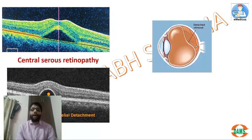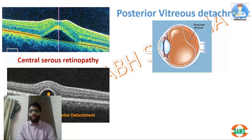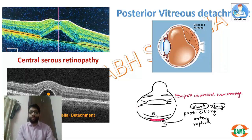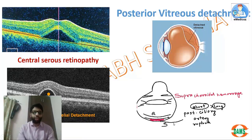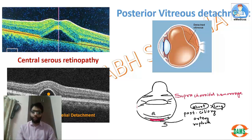When the vitreous is separated from the retina, the space between the vitreous and retina is the sub-hyaloid space, as shown in posterior vitreous detachment. The suprachoroidal space lies between the choroid and the sclera, where posterior ciliary vessels — short and long — can rupture, which is the most dangerous complication of cataract surgery, leading to suprachoroidal hemorrhage.